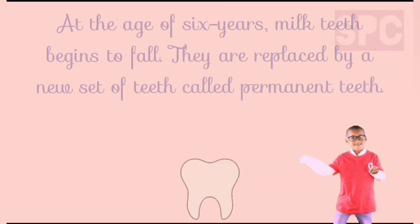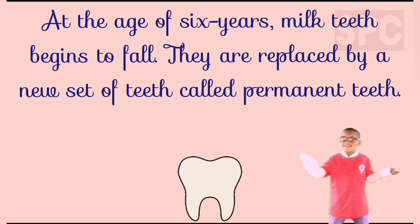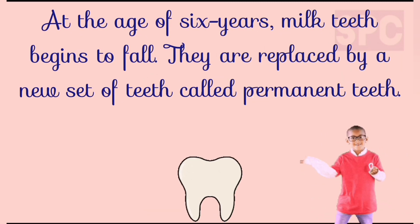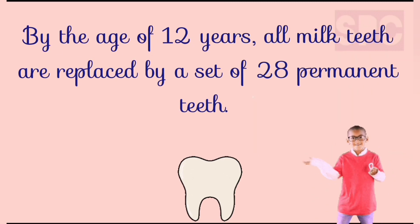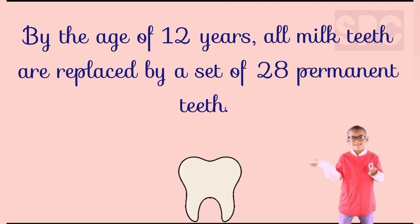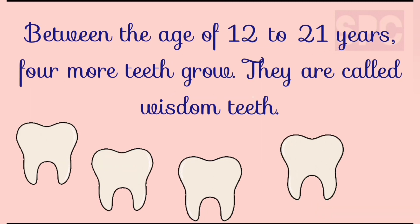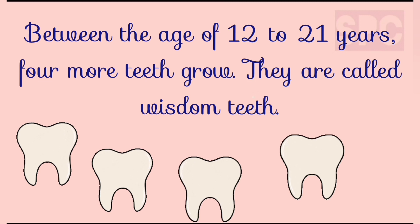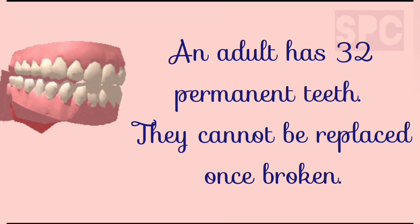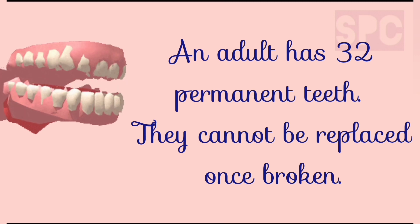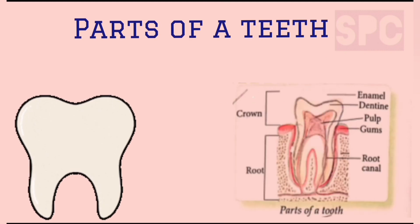At the age of six years, the milk teeth begin to fall and are replaced by permanent teeth. By the age of 12 years, all milk teeth are replaced by 28 permanent teeth. Between the ages of 12 to 21 years, four more teeth come out, called wisdom teeth. So there are 32 permanent teeth in an adult, which cannot be replaced once broken.